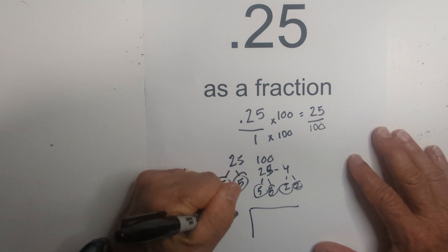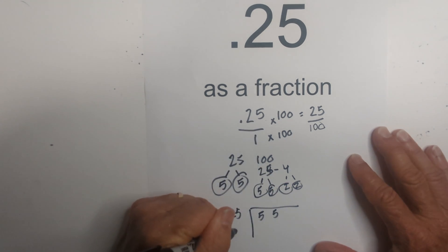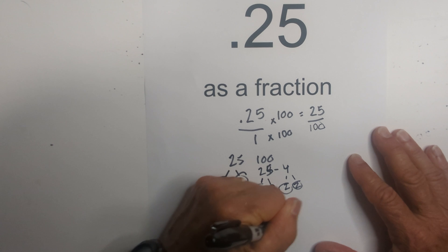So here's 25. I'm going to place 5 and 5, and then 100. I'm going to place 5, 5, 2, 2.